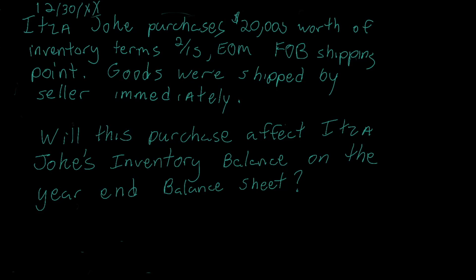Now we're going to look at an example that deals with shipping terms and when the title of ownership is properly passed. On December 30th, It's a Joke purchases $20,000 worth of inventory, terms 2/15 net end of the month, free on board shipping point. Goods were shipped by the seller immediately. Will this purchase affect It's a Joke's inventory balance on the year-end balance sheet? Basically, it's December 30th, and the following day — the 31st — we're going to make our financial statements for the entire year.